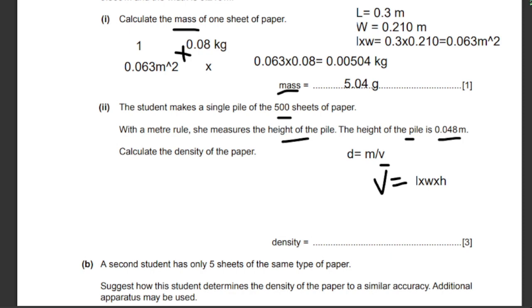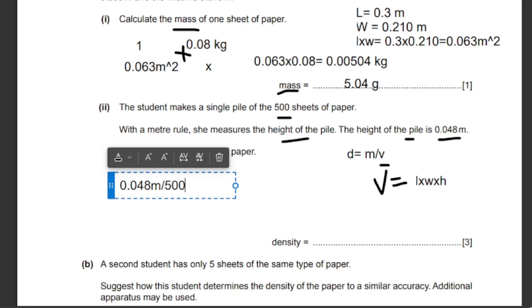I'm going to divide the total height by the number of sheets of paper. 0.048 meters divided by 500 sheets of paper, which will give me 0.000096 meters for the height.